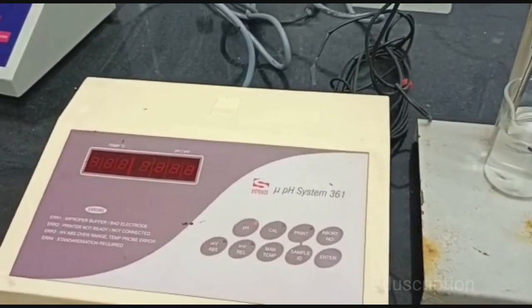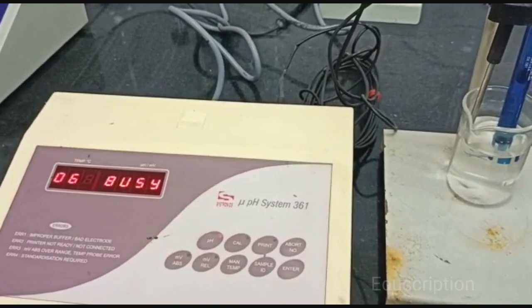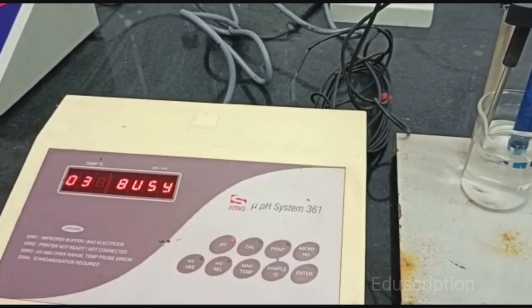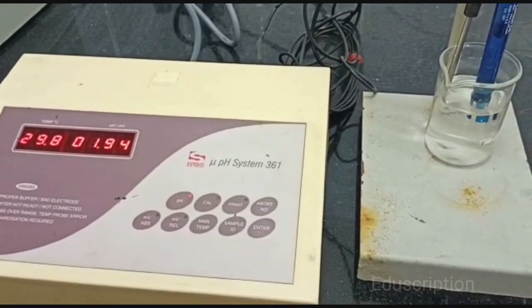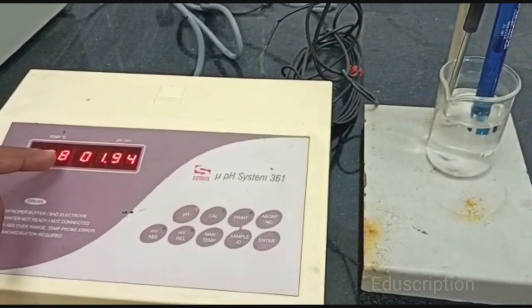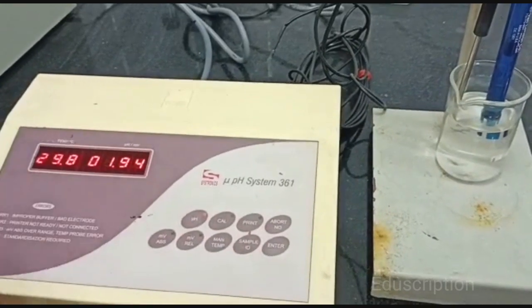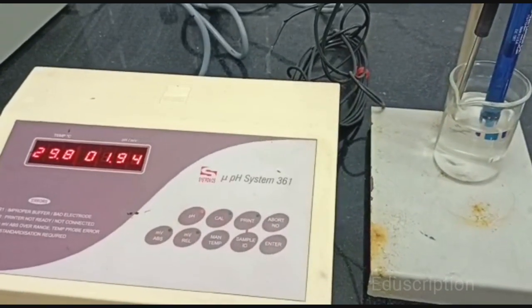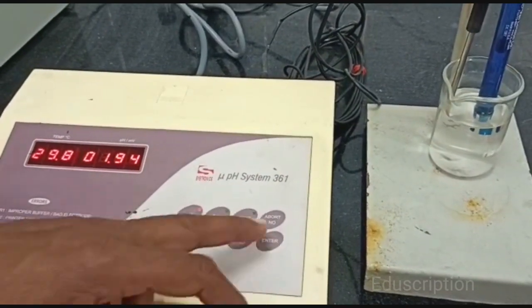Now just enter it and observe what is the pH value of beaker 1. See, 29.8, that is your temperature. 1.94 is the pH value of this beaker solution.